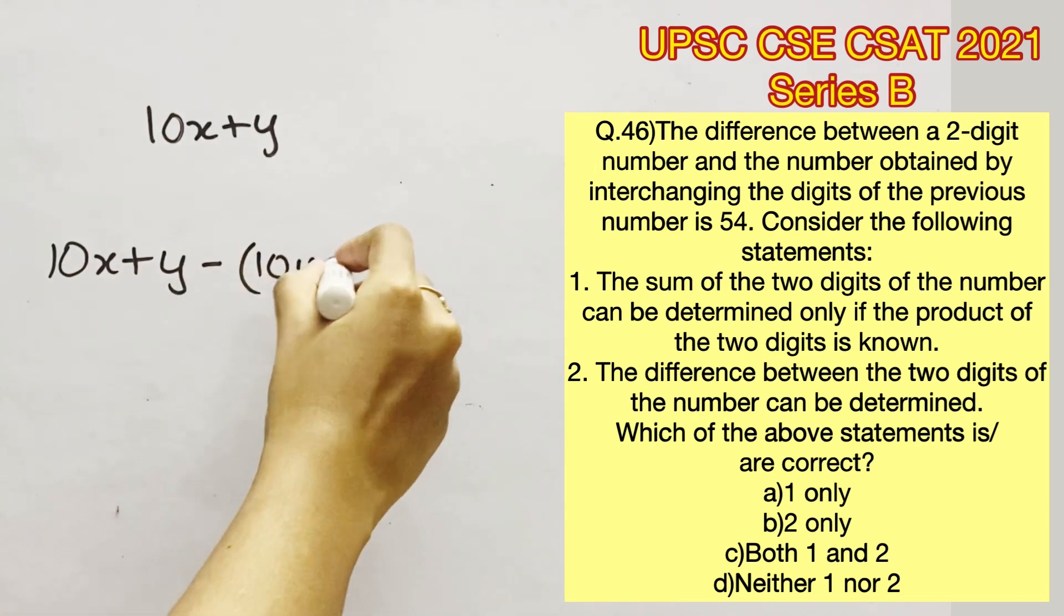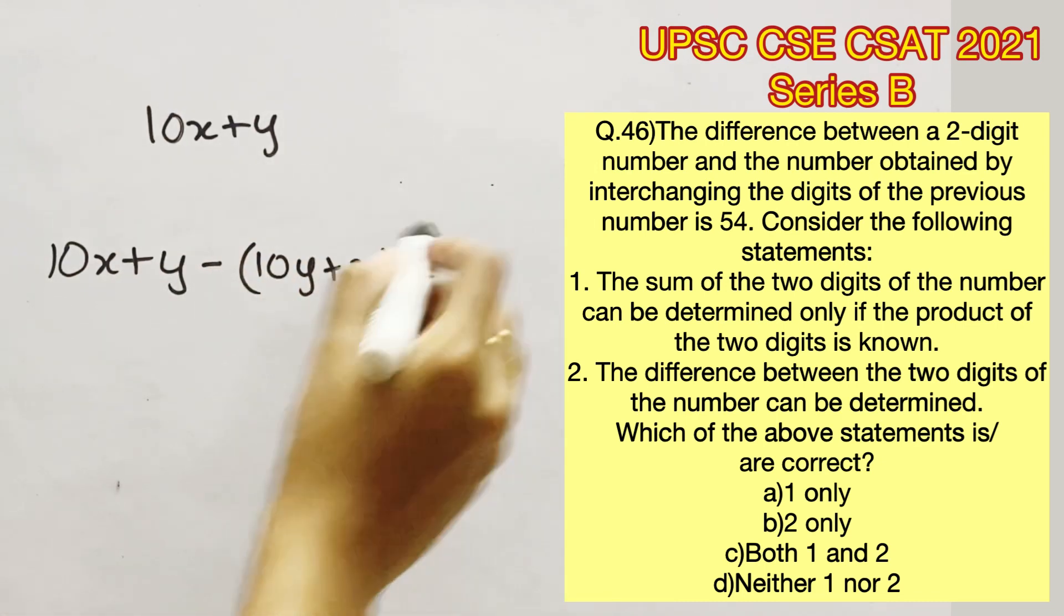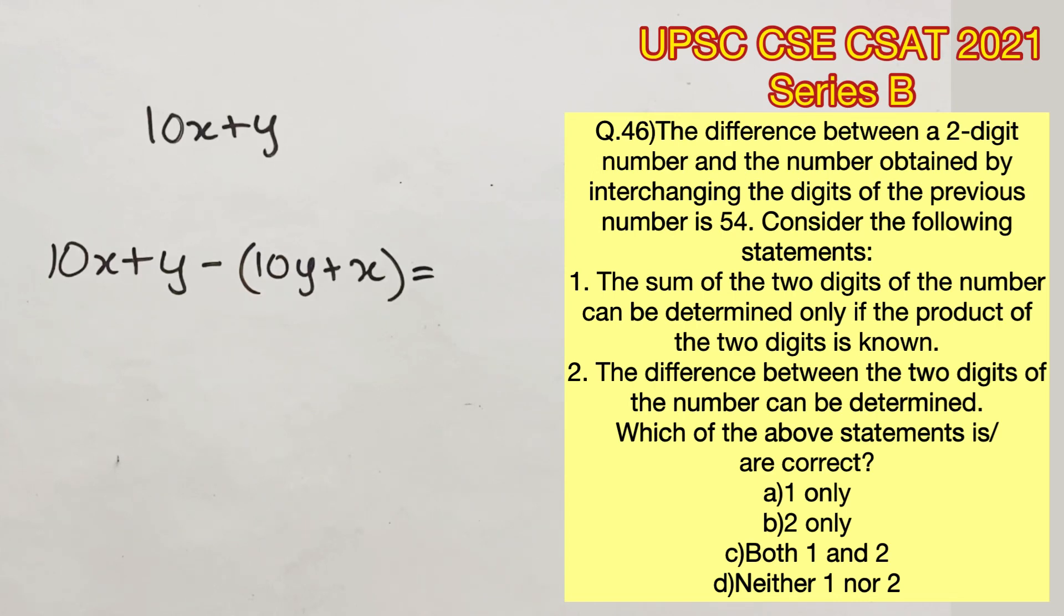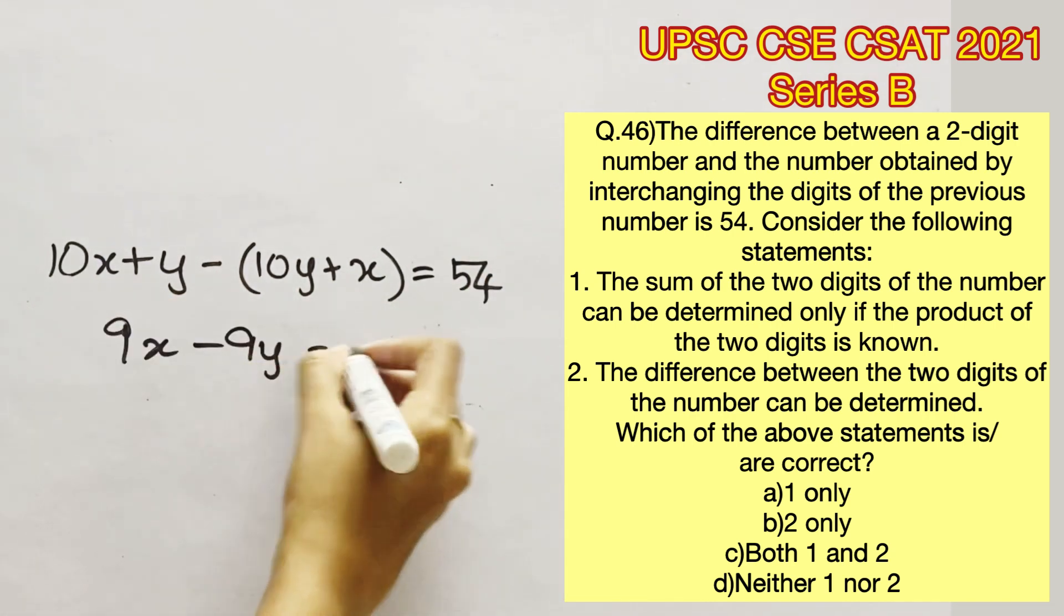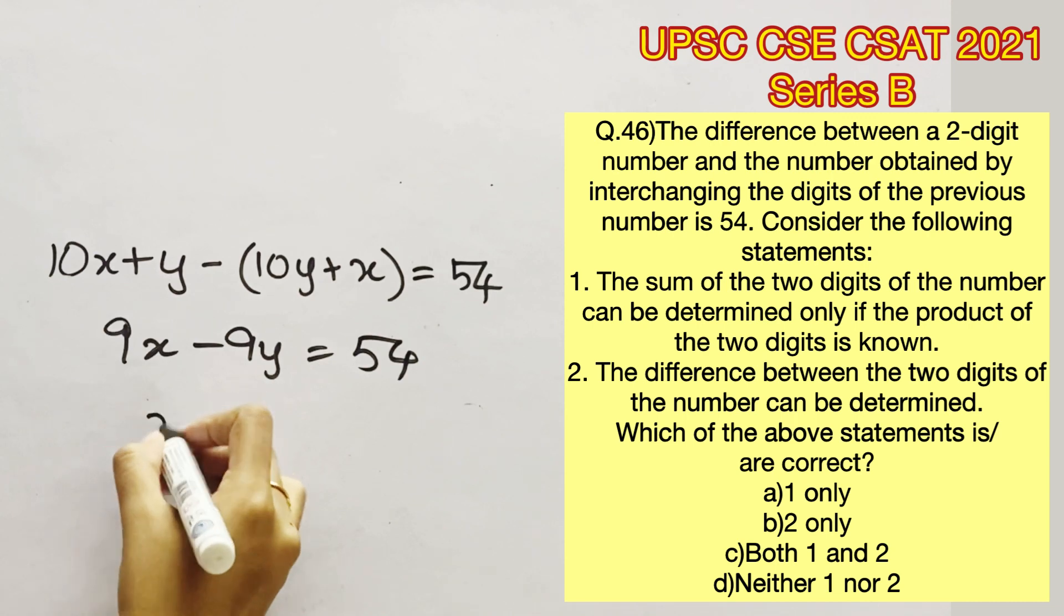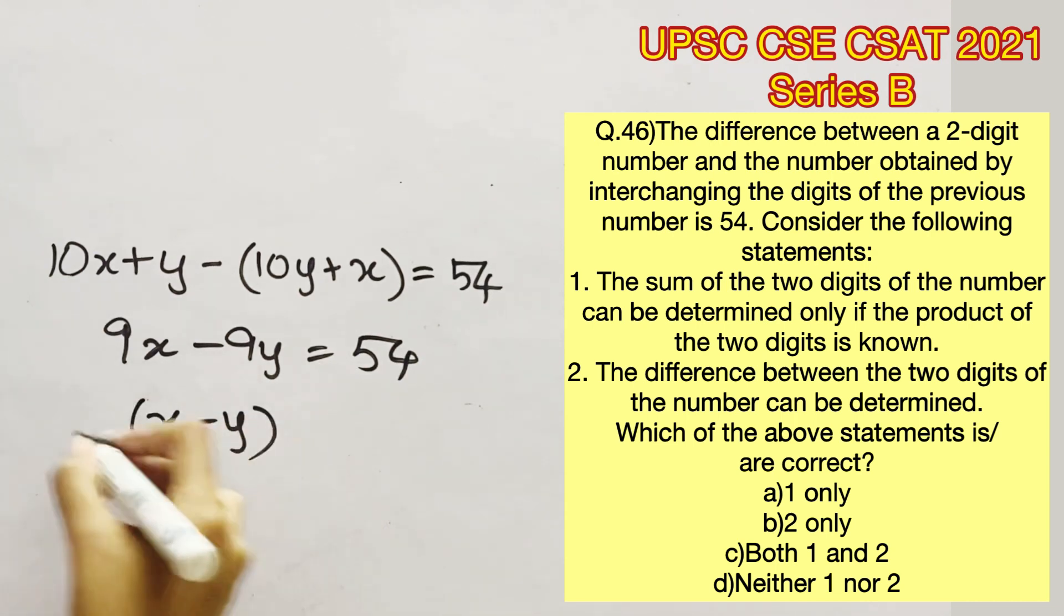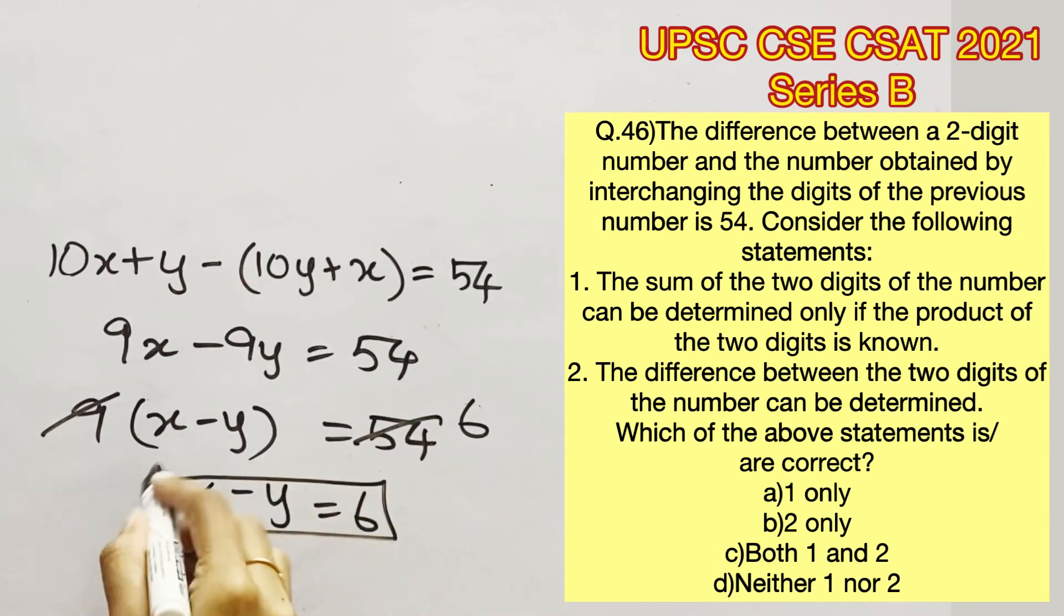Now they have given that the difference between a two-digit number and the number obtained by interchanging their digits is 54. Considering the original number as 10x plus y, if we interchange the digits we get 10y plus x. So their difference can be represented as follows. Now solving this we get 9x minus 9y which is equal to 54, further simplified as x minus y equals 54 by 9 which is 6.